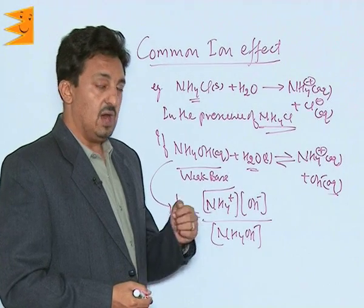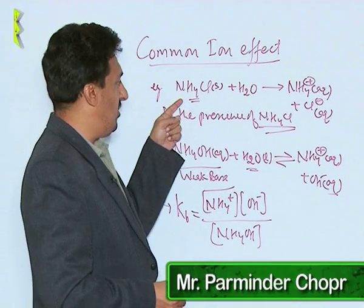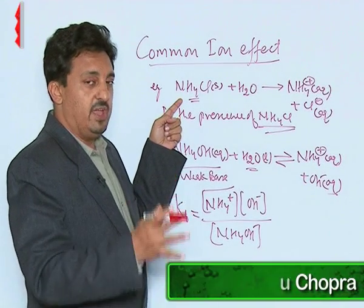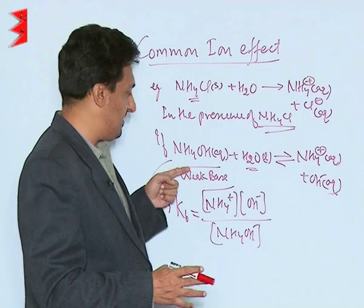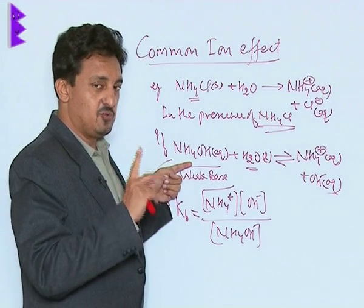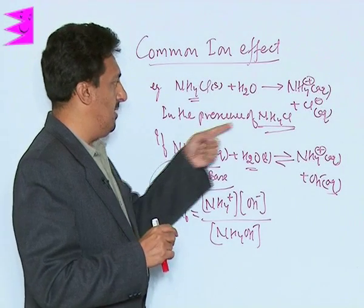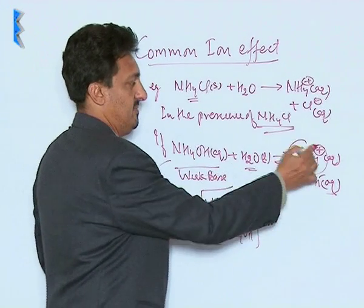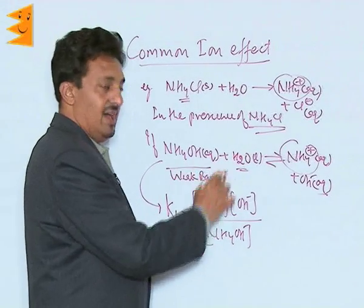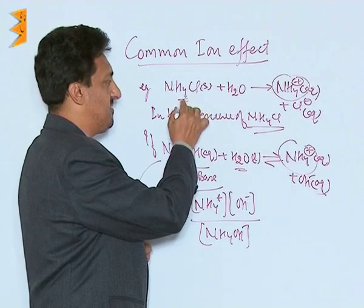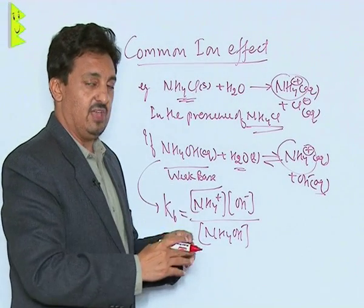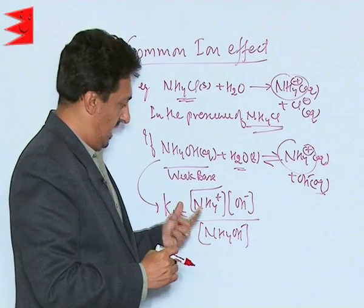Let us find out how the presence of the strong ammonium chloride salt in the solution is going to affect the dissociation of a weak base like ammonium hydroxide. These two examples share a common ammonium ion. When this weak base is added in the presence of the strong electrolyte ammonium chloride, which has already undergone complete dissociation, we observe the following.